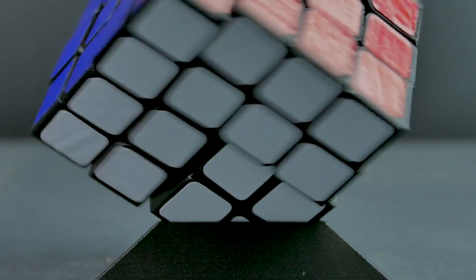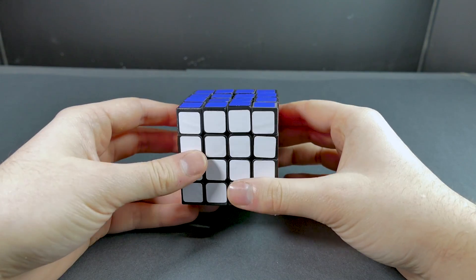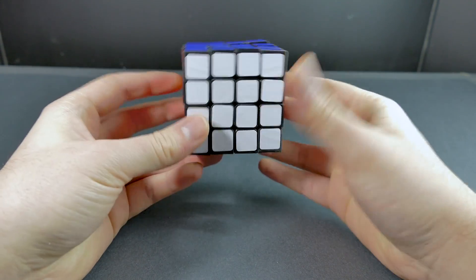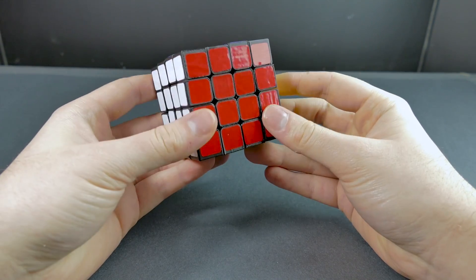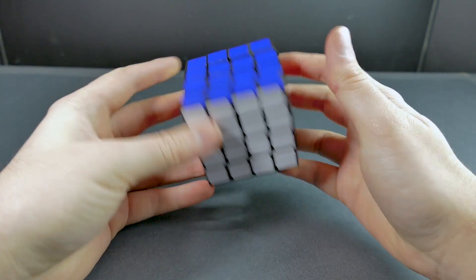All right, so finally, after five years and a few failed attempts, here is the corner turning 4x4, which, as I'll get into later, is not actually a 4x4 at all, but it certainly looks like it.